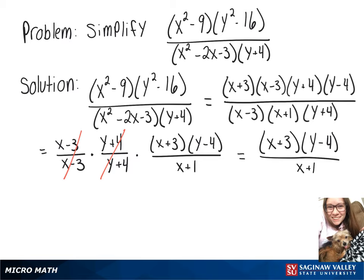Or another way to write that if you wanted to multiply the top out would be xy minus 4x plus 3y minus 12 over x plus 1.